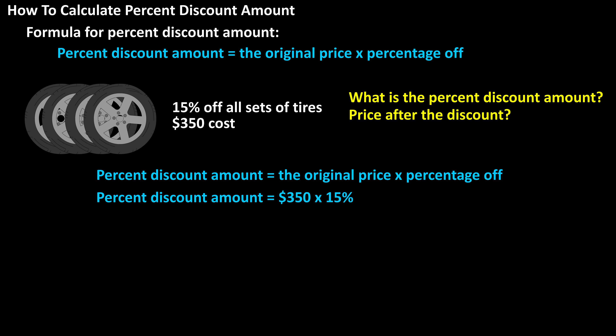we have: percent discount amount equals $350 times 15%. We need to change 15% to a decimal by dropping the percent sign and moving the decimal two places to the left to get 0.15.